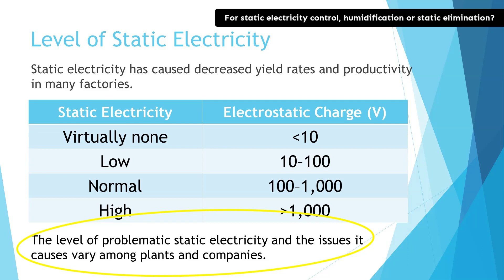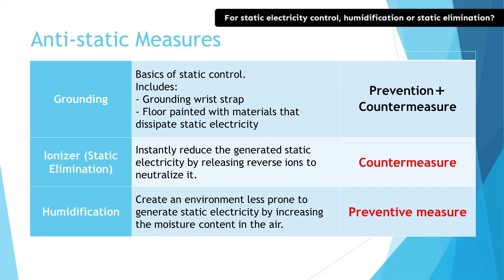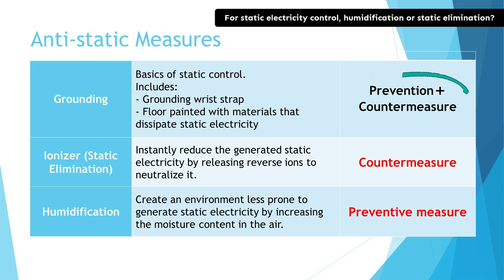Please remember this point in advance. So, what can we do to reduce static electricity? First off, ensuring proper grounding is key — it's the absolute basic. Some people use a grounding wrist strap connected to the ground, while certain factories use specialized floor coatings that aid in static dissipation. These measures serve both as preventive steps and as countermeasures against static electricity.